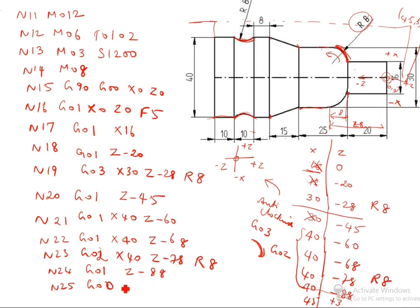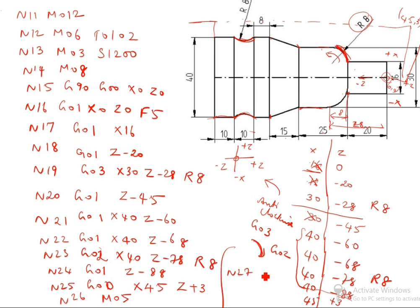After that, the final one is G00, X45, Z plus 3. N26: M05 — M05 is spindle off. N27: M09 — this is coolant off. N28: M30 — end of the program. To recap: M09 is coolant off, M08 is coolant on, M03 is spindle on, M05 is spindle off.